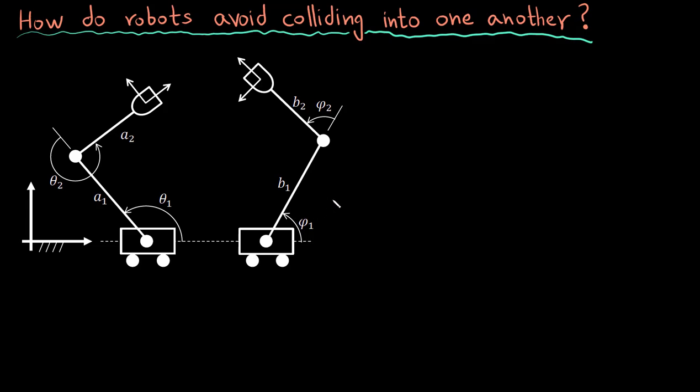Hi, I am Zain Khan and in this video we will touch upon a very interesting topic: how do robots avoid colliding into one another. I can rephrase this question slightly differently — how do I express one moving frame with respect to another? So how can I express one moving frame, let's say m1, with respect to another moving frame?